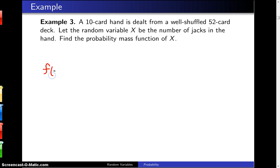We're going to write the probability mass function with the support. The question is how many jacks can you get in a 10-card hand? Well, you can get no jacks, one jack, two jacks, three jacks, at most four is the number of jacks that you can get in a 10-card hand.